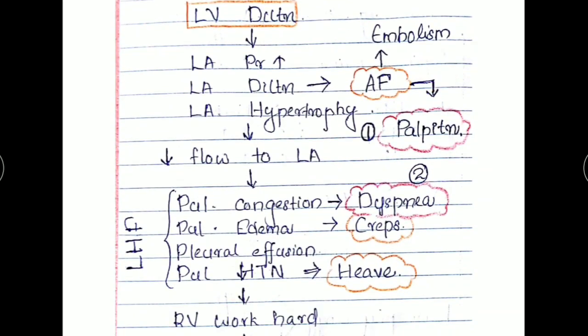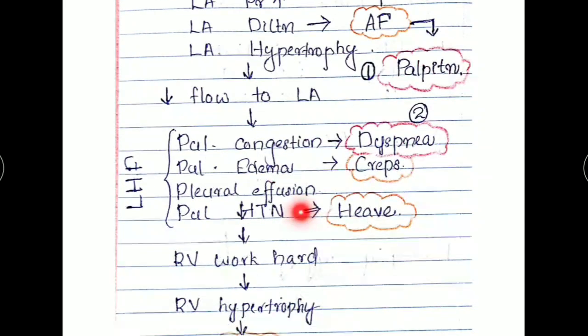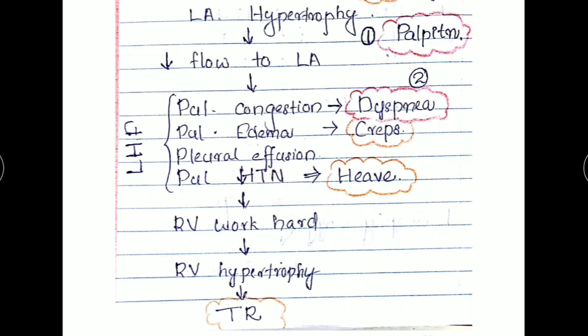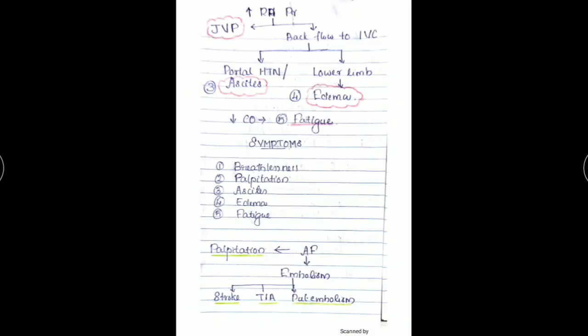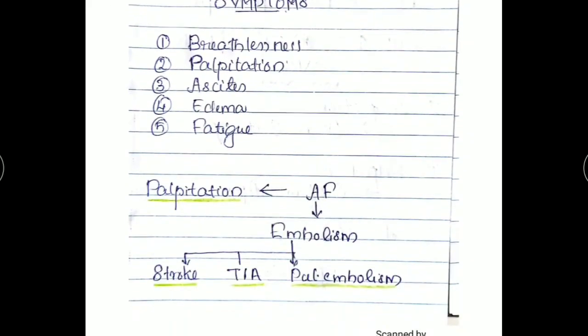Also, as a complication of pulmonary edema, crepitations can be heard. Because of pulmonary hypertension, parasternal heave can be elicited. I have told you atrial fibrillation predisposes to embolism, which can be presented as stroke, transient ischemic attack, pulmonary embolism. So you should be clear of that.